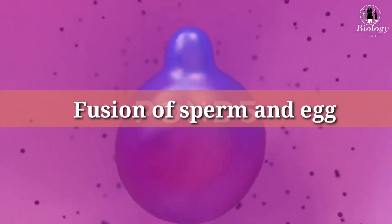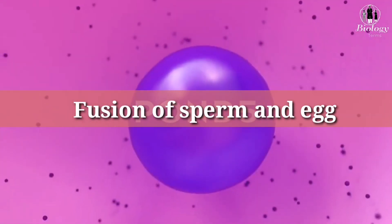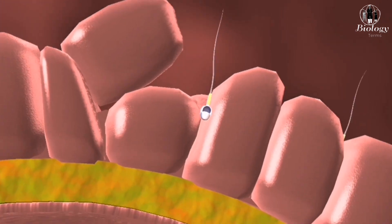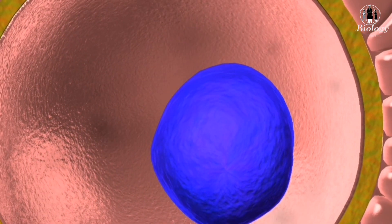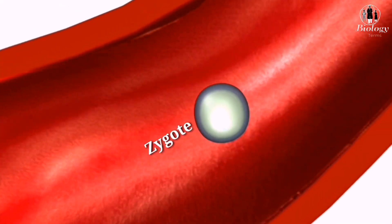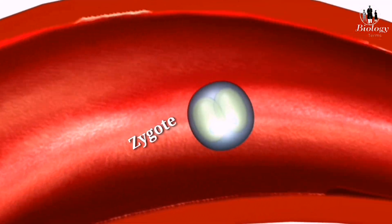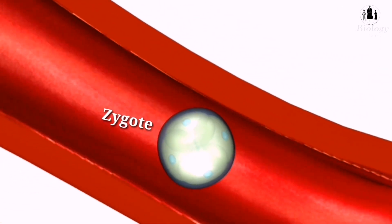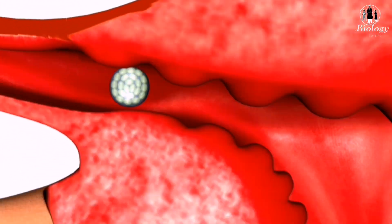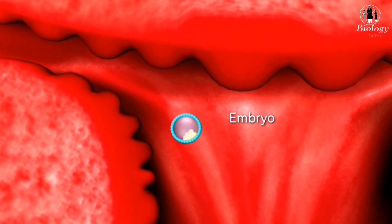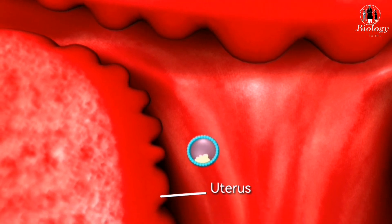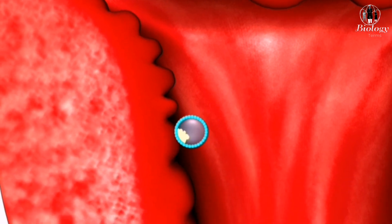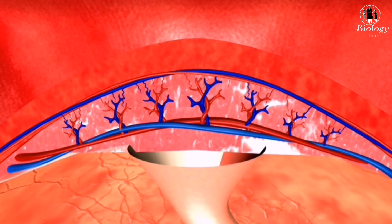Once the genetic material from the sperm cell and the egg cell combine, a zygote is formed. The zygote then travels down the fallopian tube towards the uterus, dividing and growing as it goes. If the zygote successfully implants itself in the lining of the uterus, a pregnancy begins.